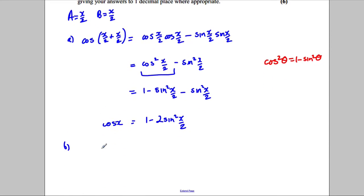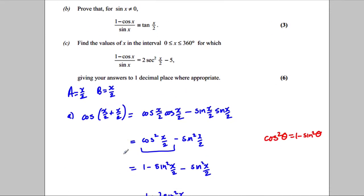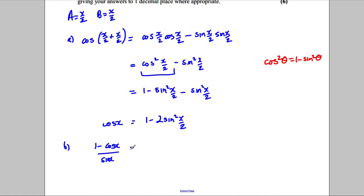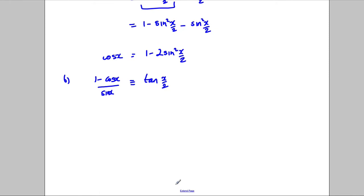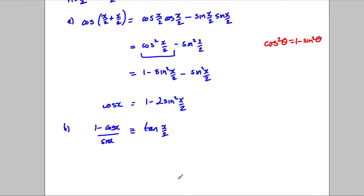So for part B, we're asked to show that 1 subtract cos X divided by sine X is the same thing as tan X over 2. Okay, so I'm going to start off, let's say, what side should I start off with? The left hand or the right hand side? Let's think about this. Let me start off with the left hand side.